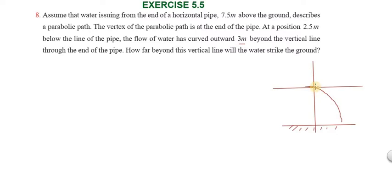it is an open downward parabola. So the open downward equation is x² = -4ay. x² = -4ay. So first we have points here, height is 7.5 meters.